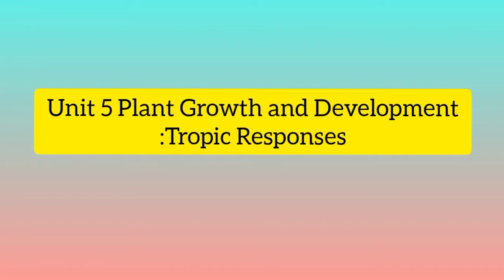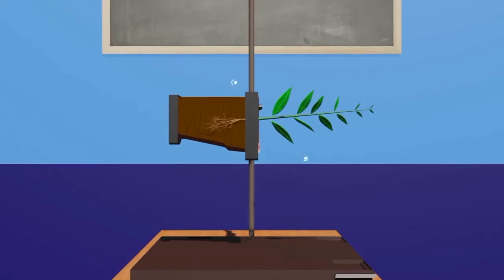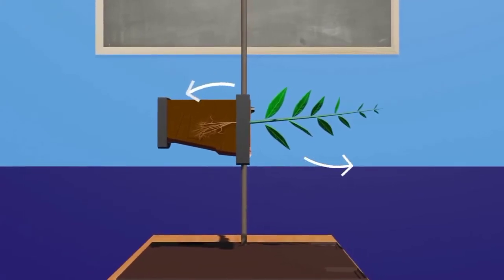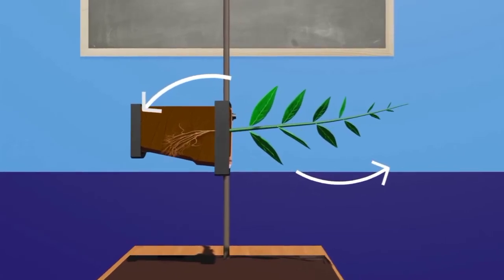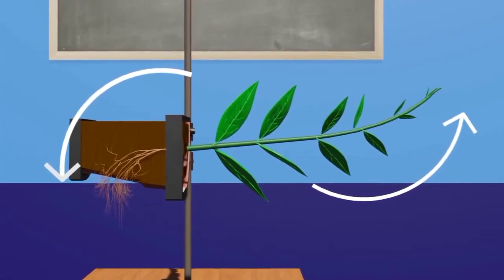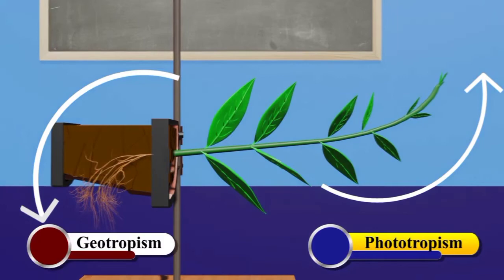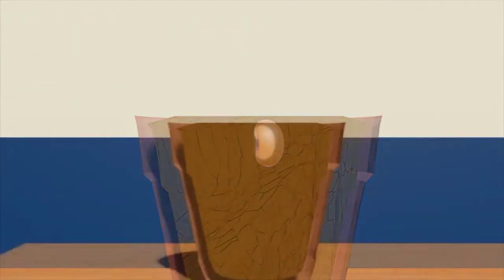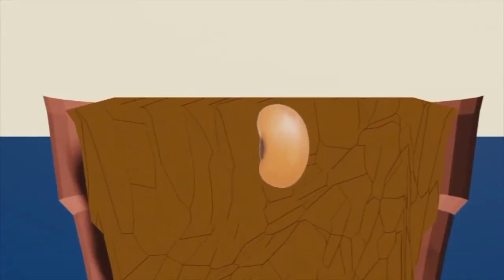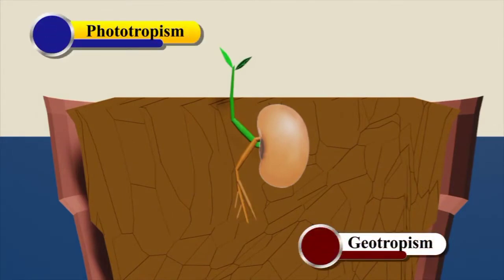We are now on the topic of plant growth and development, especially tropic responses. We will now discuss phototropism and geotropism in plants. As you can see in the video, the plant on the right side is bending towards the light — this is called phototropism. On the left side is geotropism, where the root system bends towards gravity. For seed germination, the radicle sprouts first due to gravitational pull, which is geotropism, and the epicotyl moves towards the light, which is phototropism.